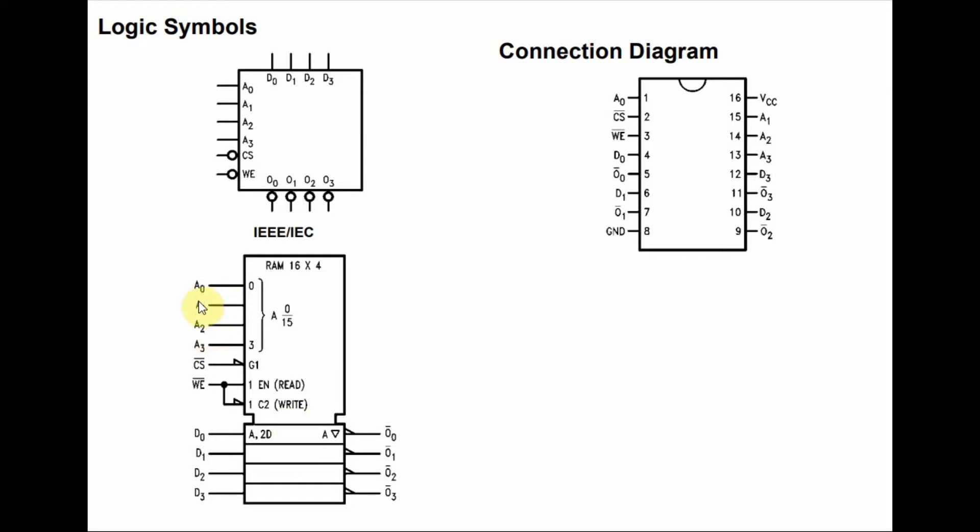We have the output pins O0 to O3, and through these pins we can see the 4-bit number stored in any location. But this will only be available when the write enable pin is at high logic. Notice that the output pins are all active low, meaning that we have to invert each pin so that we can see the correct value.